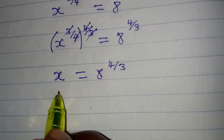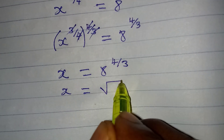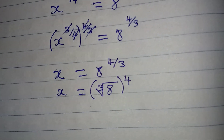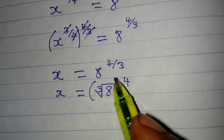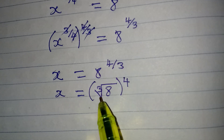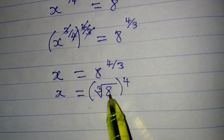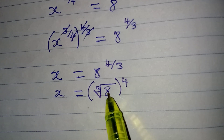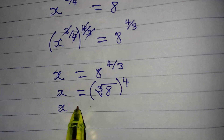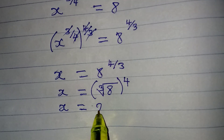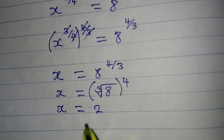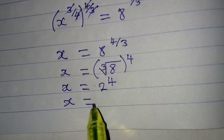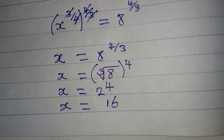This means x equals the cube root of 8, all raised to the power of four. When a number is raised to a fractional power, the denominator becomes the root. Since the denominator is three, we find the cube root of 8 and raise the answer to four. The cube root of 8 is 2, since 2 times 2 times 2 equals 8. Then 2 raised to the power of four is 16, so x equals 16.